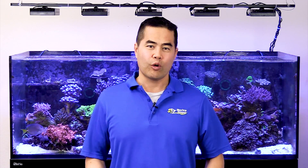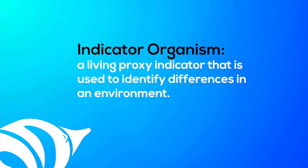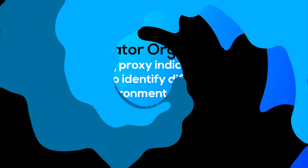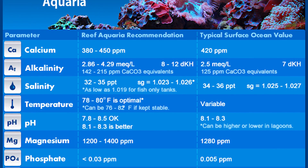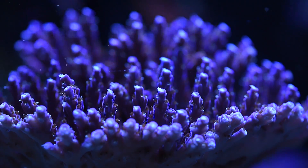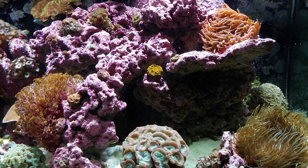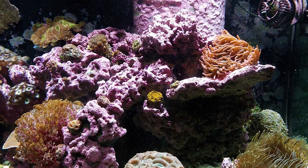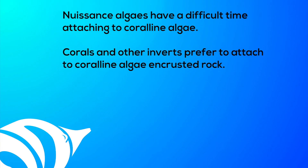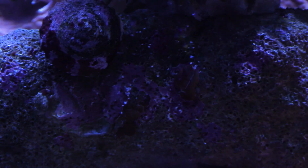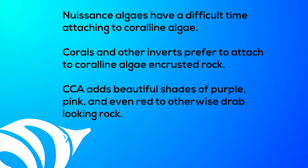There are many reasons people desire coralline algae in the reef tank. CCA is often used as an indicator organism — if you have CCA growth, your lighting and water chemistry conditions are good enough for keeping stony corals. Coralline algae can tie together live rock and coral frags just like it does in wild reefs, helping to create a more stable aquascape and keeping your frags in place. Nuisance algaes have a difficult time attaching to coralline algae, meaning CCA-covered rocks rarely have unsightly nuisance algae growing on them. Corals and other inverts also prefer to attach to CCA-encrusted rock.